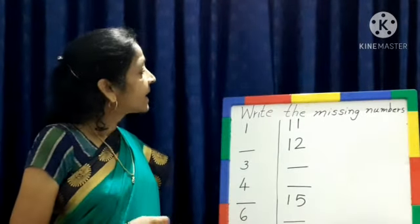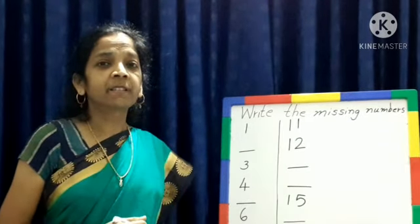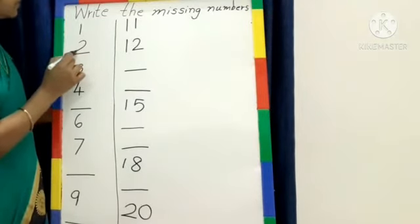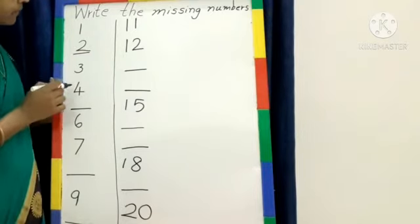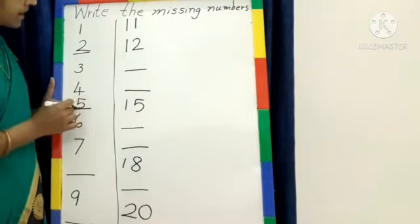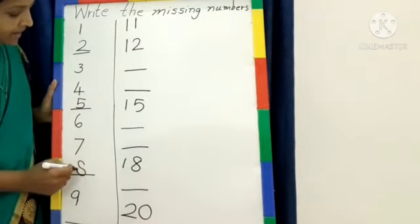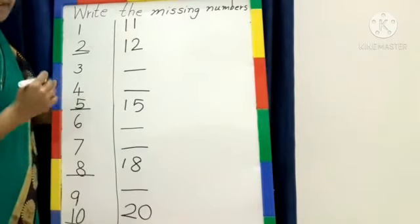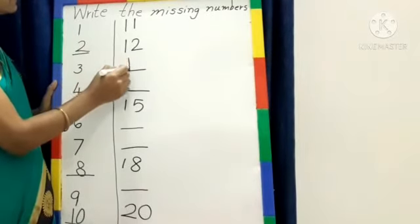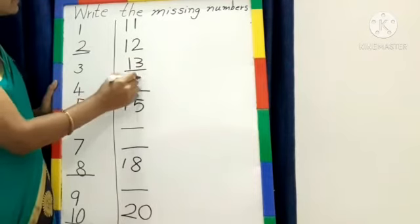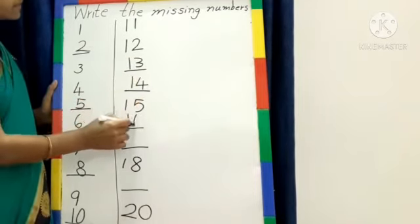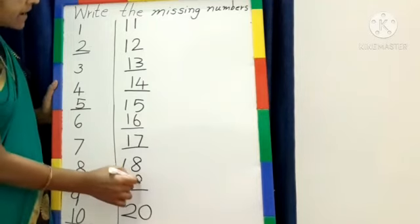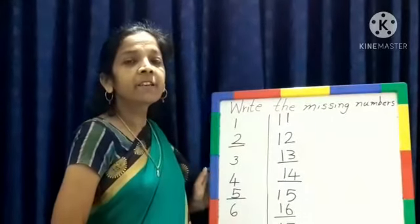Now next question: write the missing numbers. Look here. 1 — here 2 is missing, write number 2 — 3, 4, 5, 6, 7, 8, 9, 10, 11, 12 — 13 is missing — 14, 15, 16, 17, 18, 19, 20. This is the way you should write.